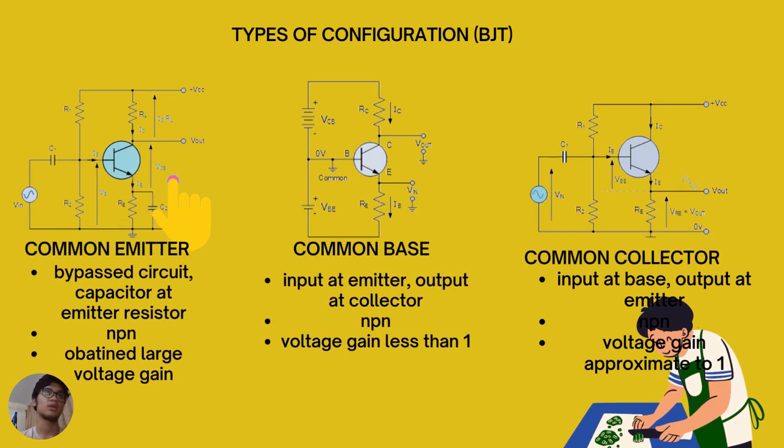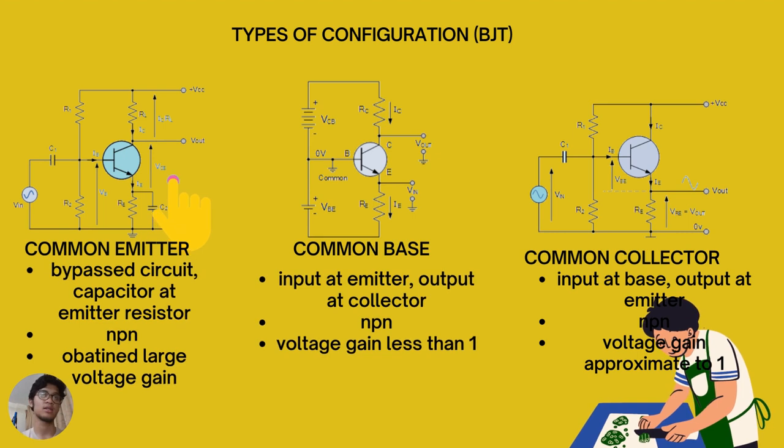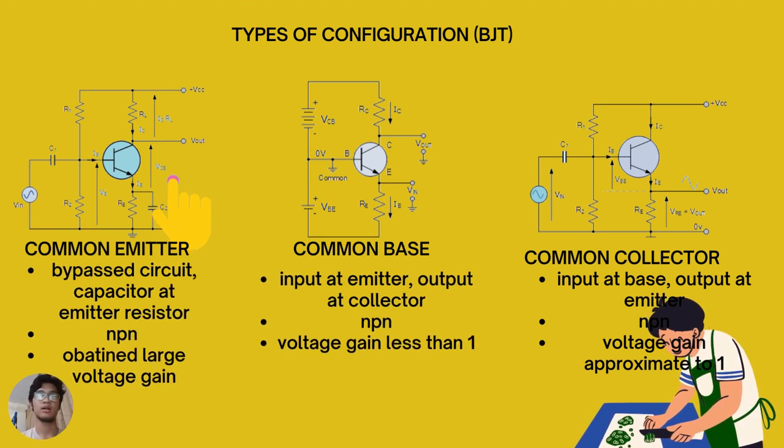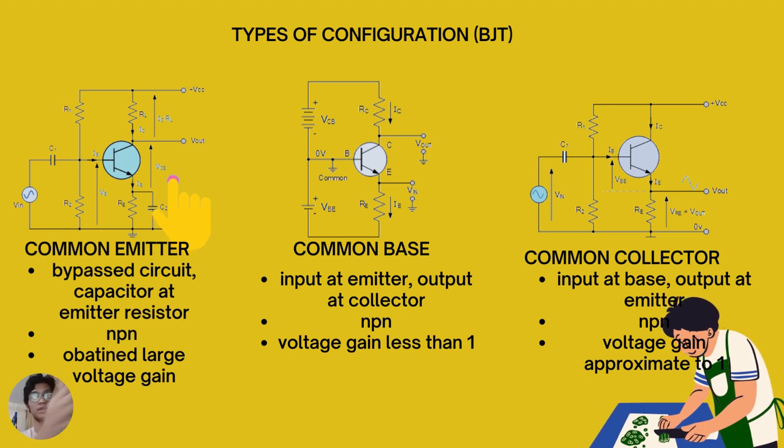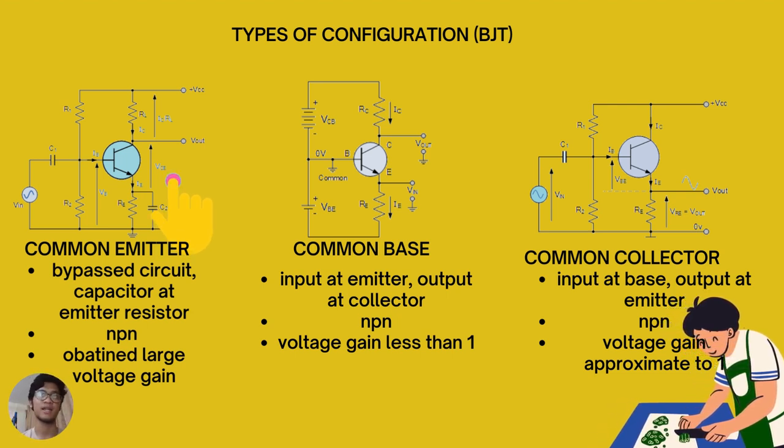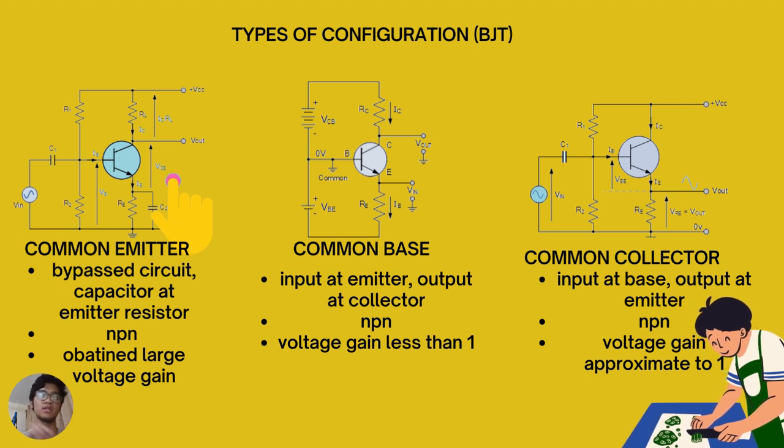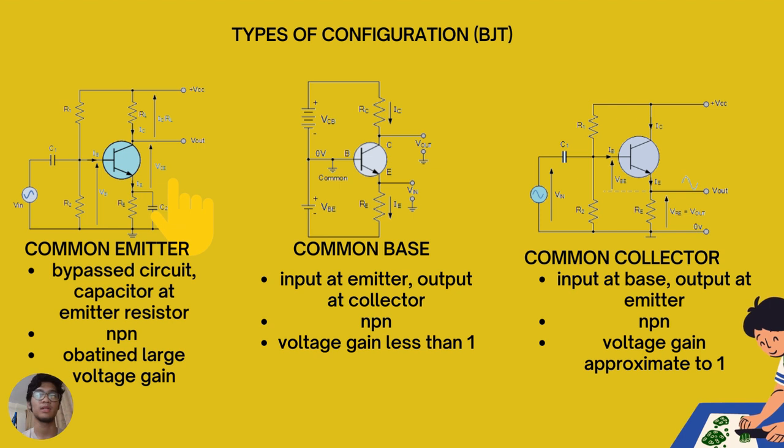Next, we are going to look at the types of configuration based on BJT transistors. We have three configurations. First, common emitter. Common emitter amplifier configuration produces the high current and power gain of all three bipolar transistor configurations. This is mainly because the input impedance is low as it is connected to a forward biased PN junction, while the output impedance is high as it is taken from a reverse biased PN junction.